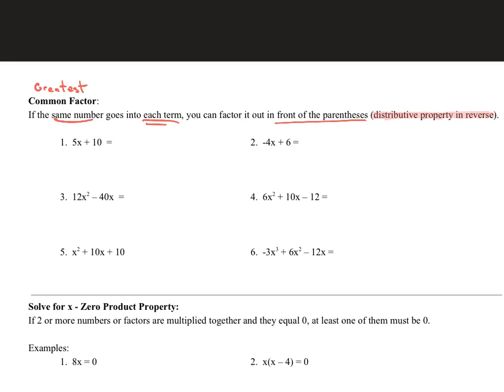And so as we do that, what we look at is that for each of these examples, you think, what number goes into each term? So what goes into 5x and what goes into 10? And if you think about that, wait a minute, I'm going to pull something out from both of these, reverse my distributive property.